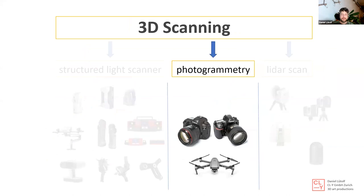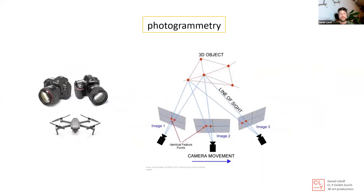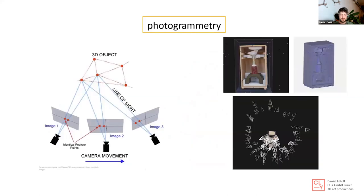In photogrammetry, the next step is to take a lot of pictures. The software checks for identical points across the pictures, and with that it can reproduce the whole 3D image, making a point cloud. Here on the right side we have a sculpture still in the box, and we took about 100 to 120 images to get the 3D model. The more pictures you take and the higher the camera resolution, the better the result.